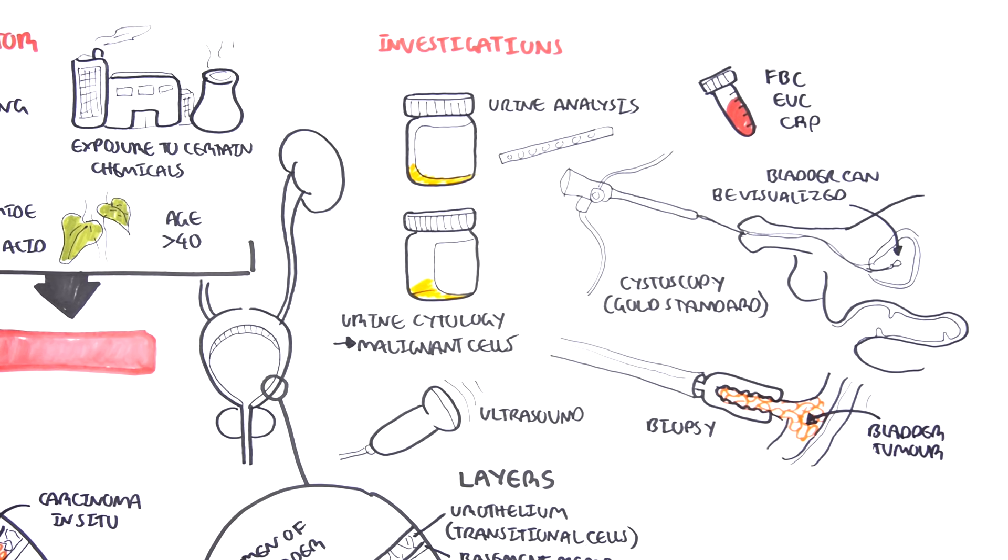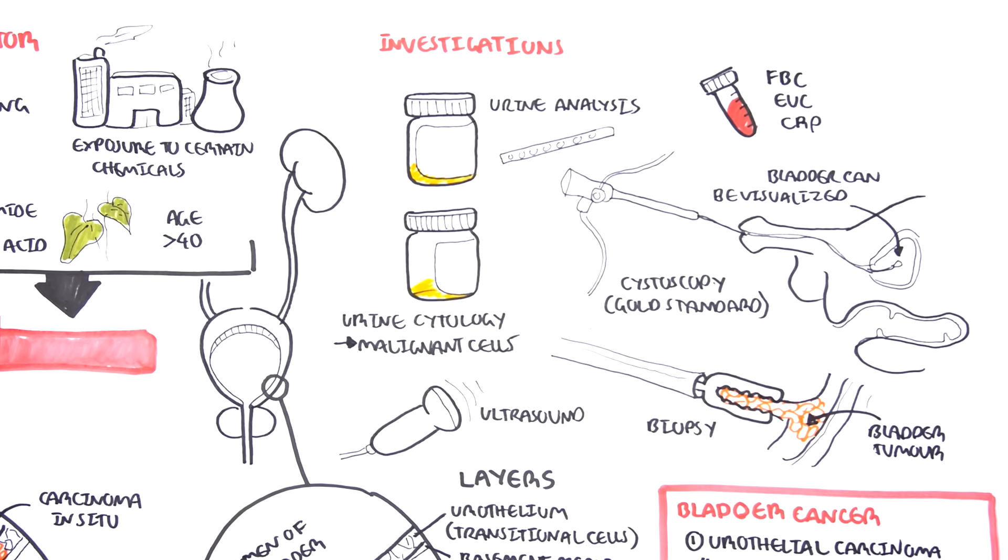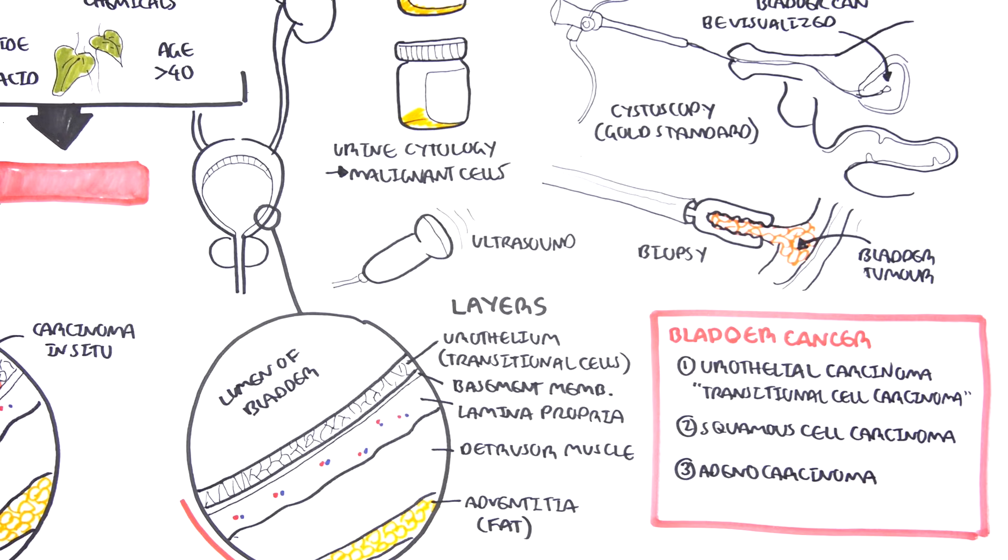The most common types of bladder cancer is urothelial carcinoma, as I mentioned, which is the most common, and this is also known as transitional cell carcinoma. There is also other types of bladder cancers, including squamous cell carcinoma and adenocarcinoma.